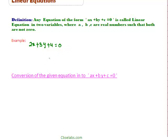Here a is equal to 2, b is equal to 3, and c is equal to 4. Let's take another example: px plus qy plus r equal to 0. This is also a linear equation in x and y.